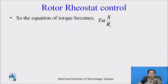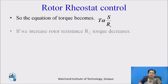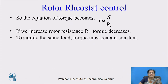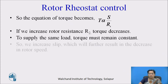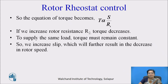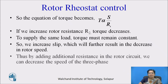The equation of torque becomes: torque is proportional to R2. If we increase rotor resistance R2, torque decreases, and to supply the same load, torque must remain constant. So we increase slip, which will further result in a decrease in rotor speed. Thus, by adding additional resistance in the rotor circuit, we can decrease the speed of a three-phase induction motor.